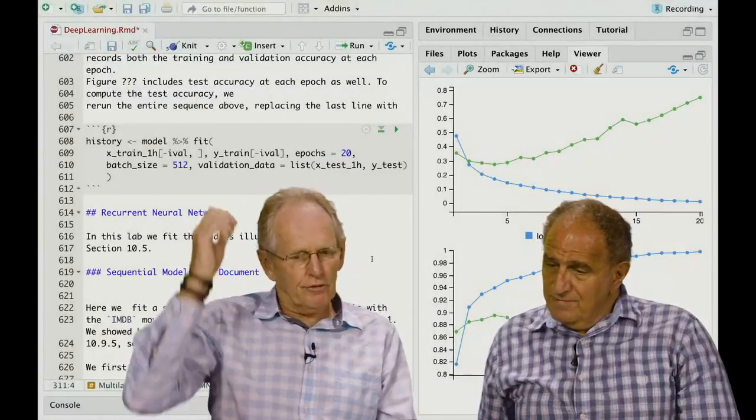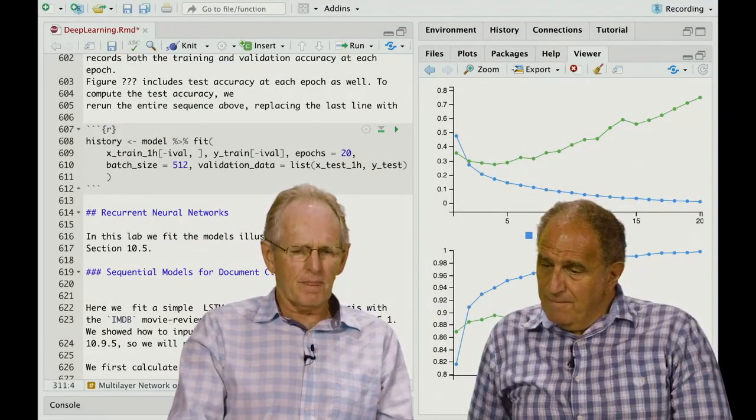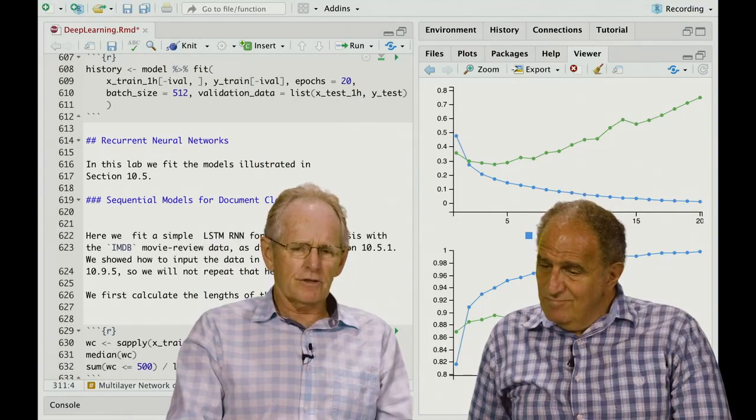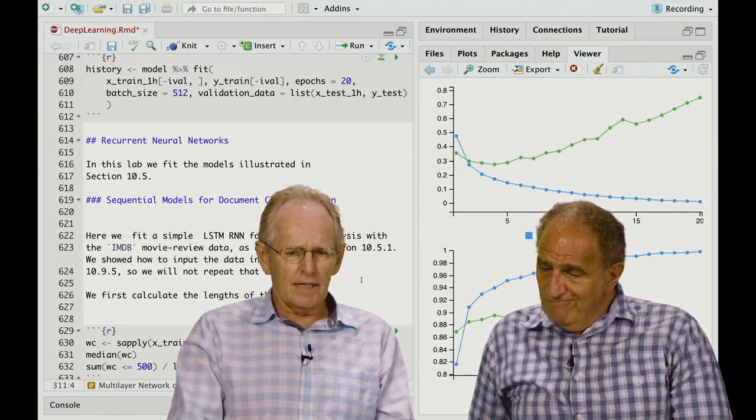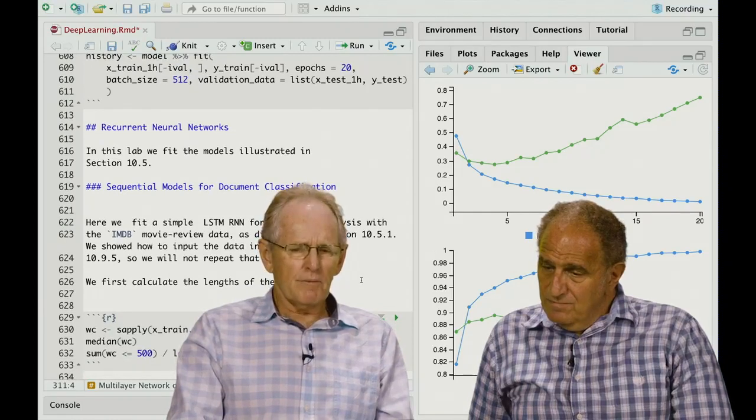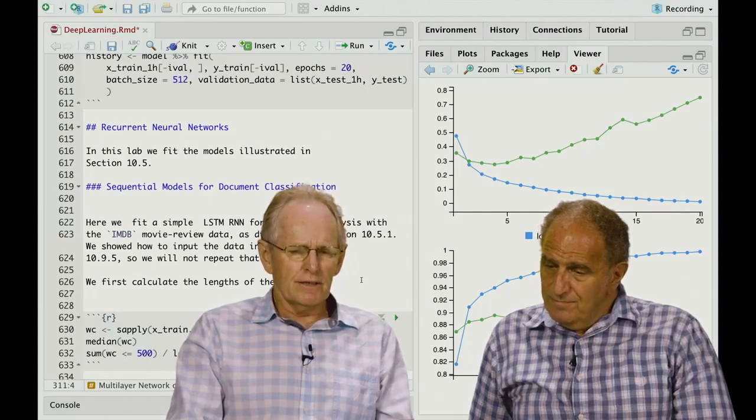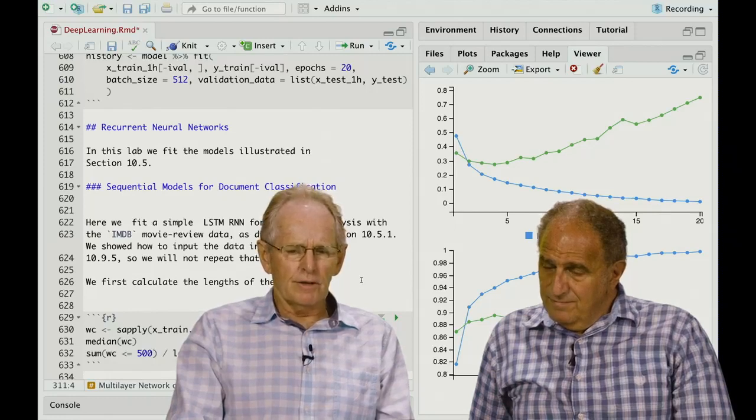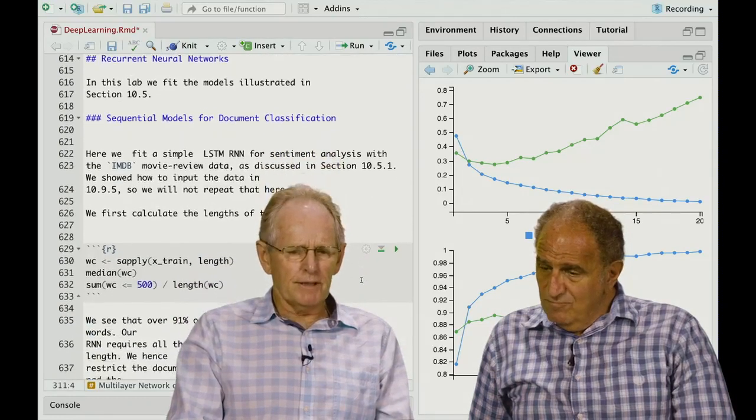Next, we're going to talk about recurrent neural networks, and we'll go back to this document classification example. In the chapter, we described using an LSTM recurrent neural network, and that's what we're going to implement here.